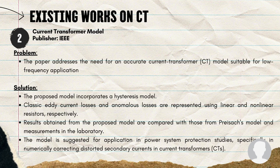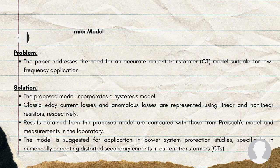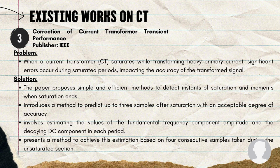For the next research, the problem is the need for an accurate CT model suitable for low-frequency applications. The proposed model incorporates a hysteresis model where classic eddy current losses and anomalous losses are represented using linear and nonlinear resistors respectively. The results from the proposed model are compared with precise models and laboratory measurements. For the last research, the problem is that when a current transformer saturates while transforming heavy primary current, significant errors occur during saturated periods, impacting accuracy. The solution is a simple and efficient method to detect instances of saturation and when saturation ends, predicting up to three samples after saturation with acceptable accuracy, and estimating the fundamental frequency component amplitude and decaying DC component in each period.